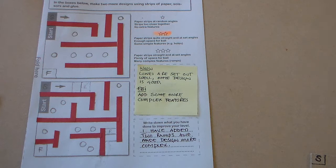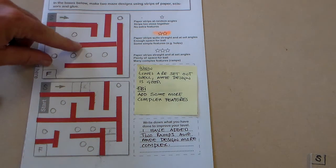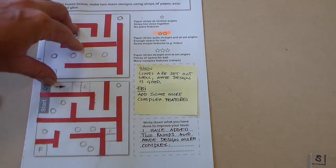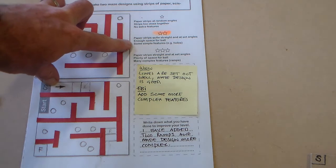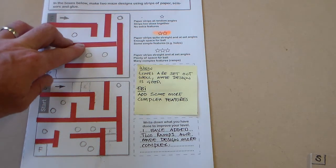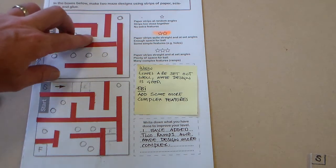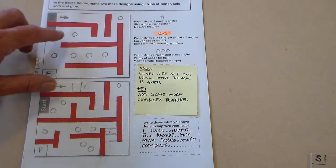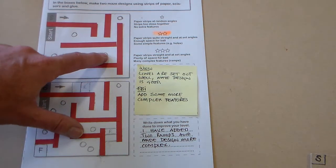On this sheet you can see that we have two design ideas. The first design idea here, made using paper strips, has been marked at two stars. It says the paper strips are straight, there is enough space for the ball, though it might be a bit tight here, and it has some simple features like holes.